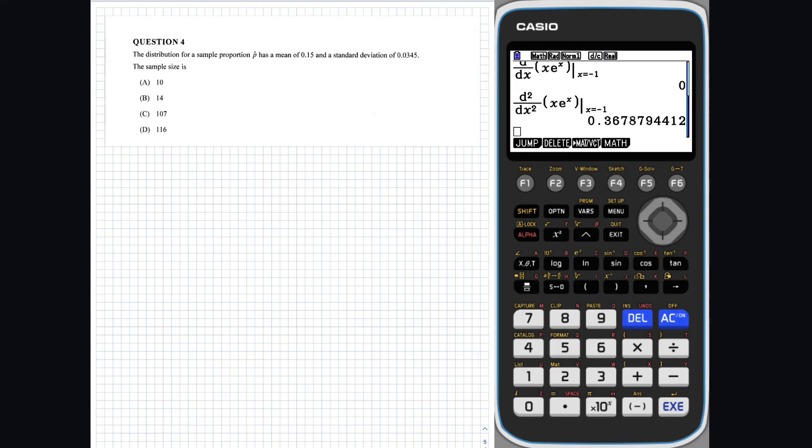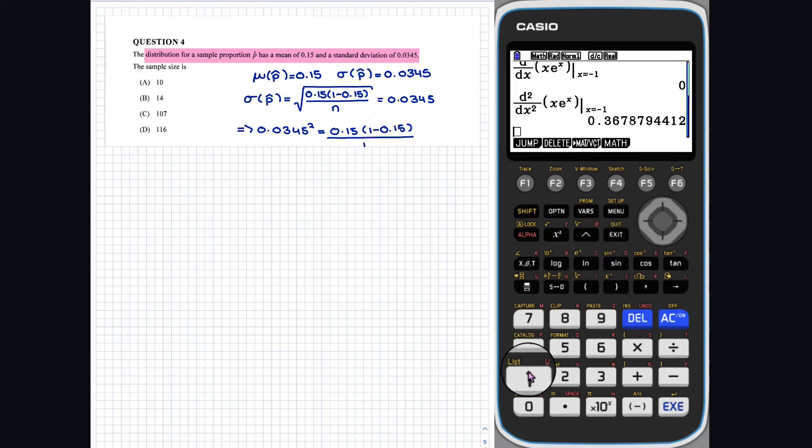Question 4. In the question, we are told that the sample proportion has a mean of 0.15 and a standard deviation of 0.0345. We can determine the sample size n by solving the following. This can be evaluated in our calculator as follows.